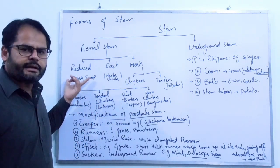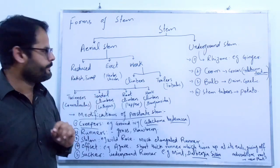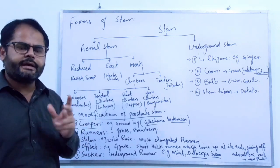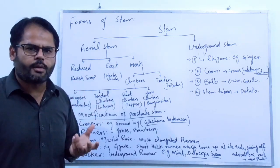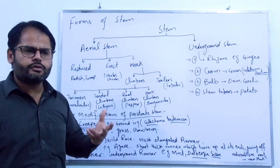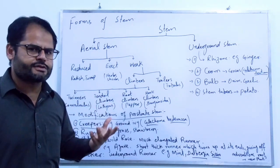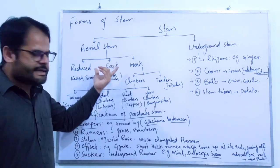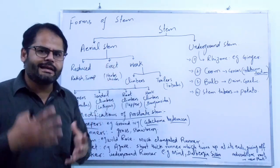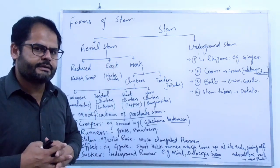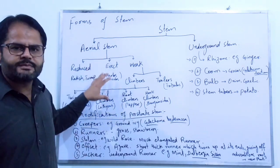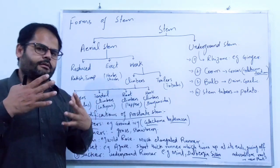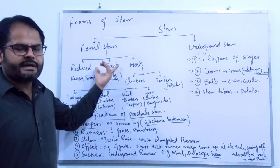The second category is called erect stem. Erect stem is very common — almost most of the angiosperms and gymnosperms have erect stem. The examples are very clear: all herbs, shrubs, and trees have erect stem, and in trees the erect stem is woody in nature.